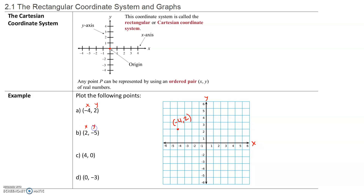The second point is (2, -5). The x-coordinate is 2 and the y-coordinate is -5, which means we go 2 units to the right and 5 units down. For the point (4, 0), the x-coordinate is 4 and the y-coordinate is 0, which means we go 4 units to the right but don't go up or down. For (0, -3), we stay in the middle since x is 0, and go 3 units down.